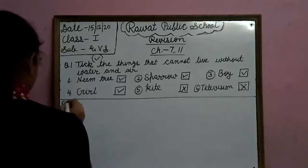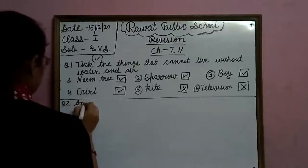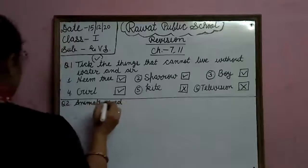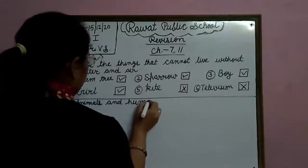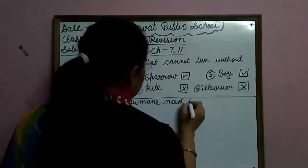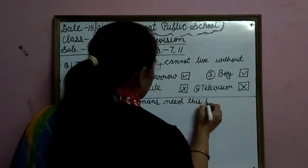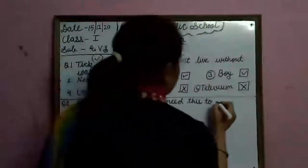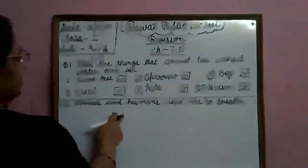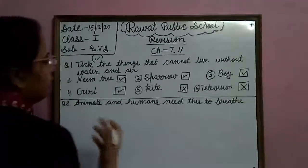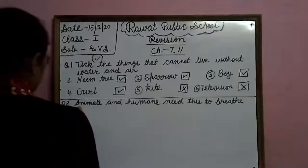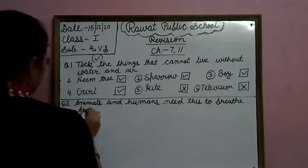Question Number 2: Animals and humans need this to breathe. Animals and humans — to breathe B-R-E-A-T-H-E — what do animals and humans need to breathe? Air. So write here: A-I-R, air.